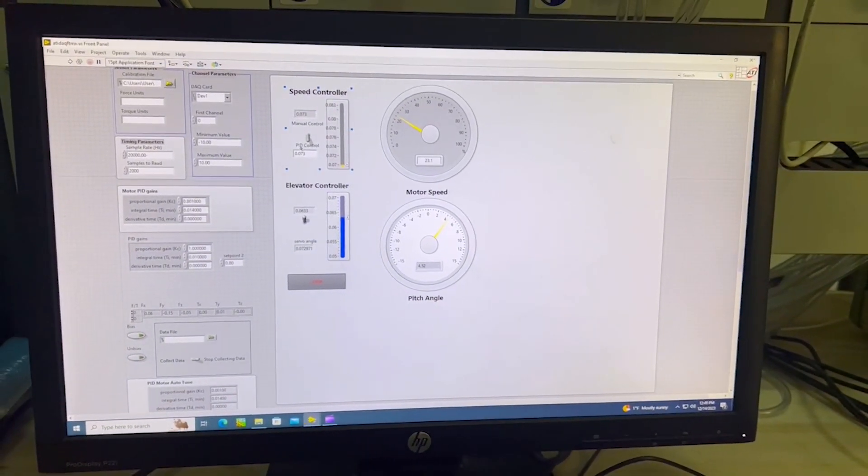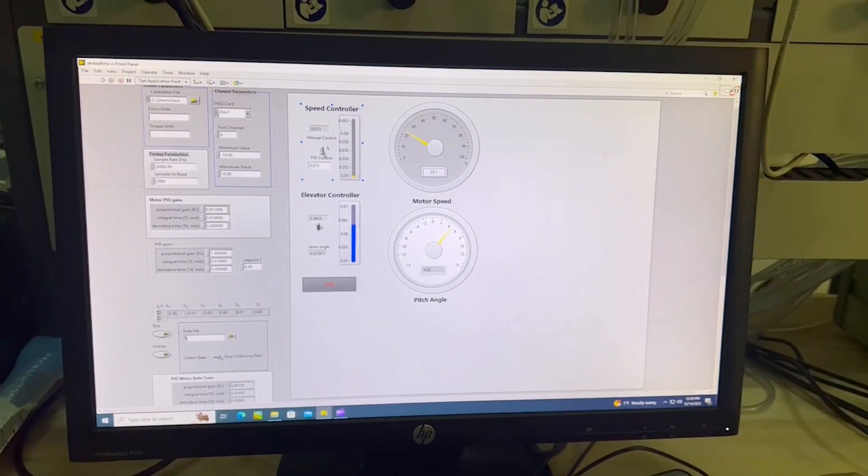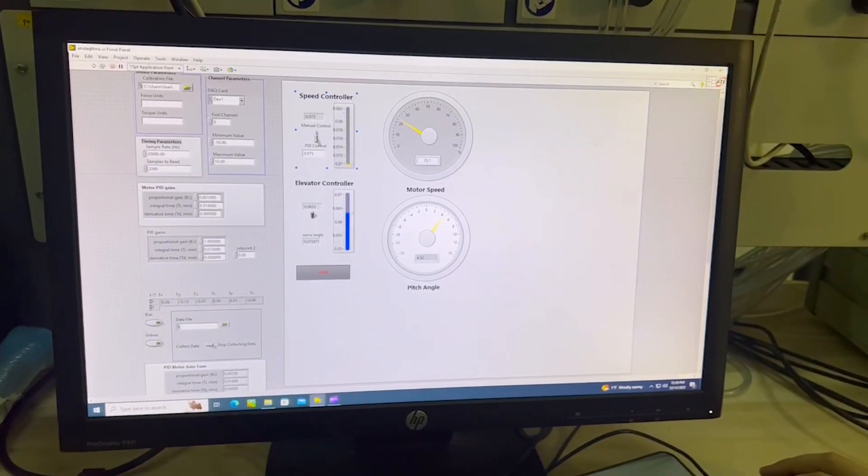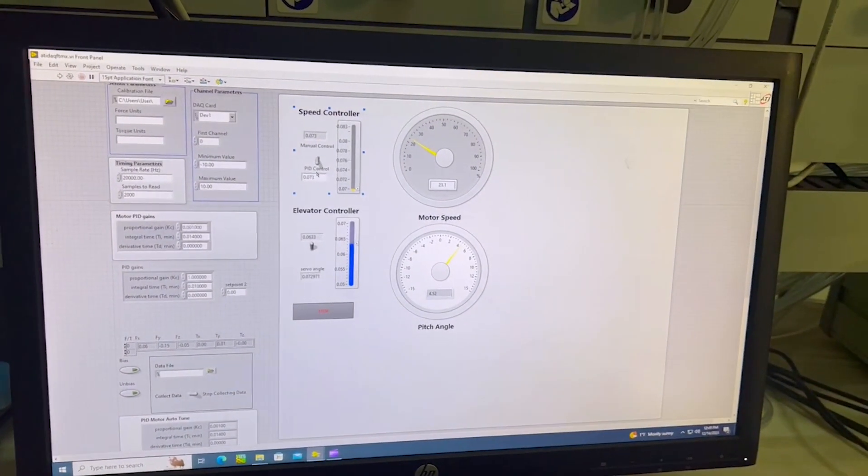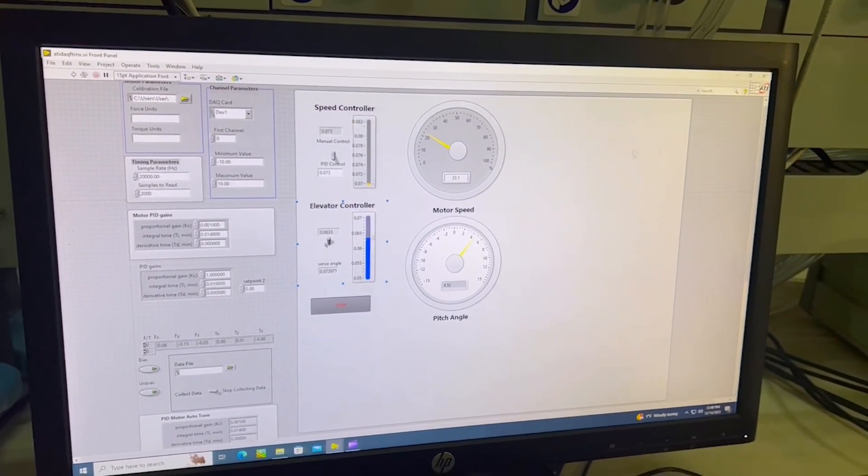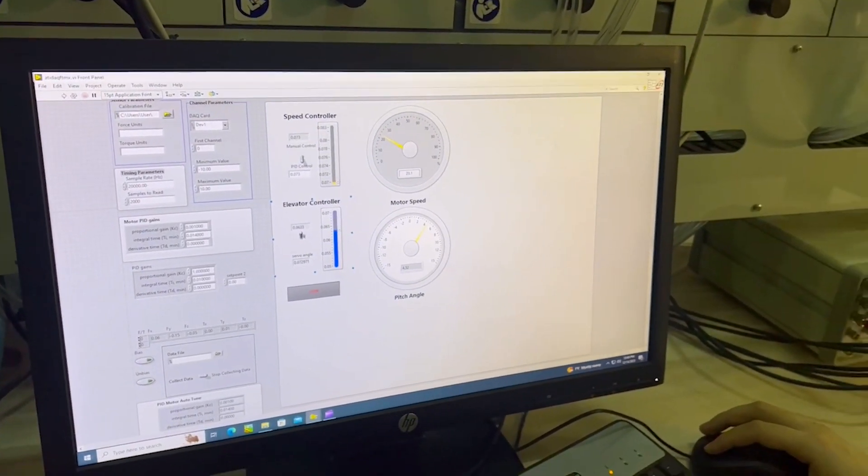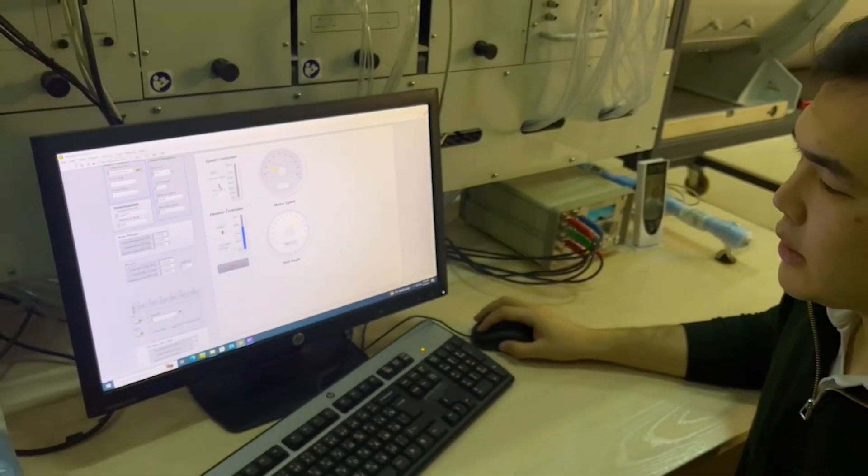The speed of the plane can be controlled by the PID, and the elevator can be controlled manually or automatically.